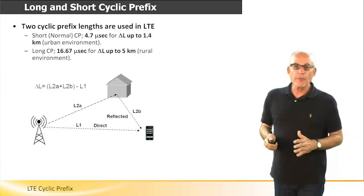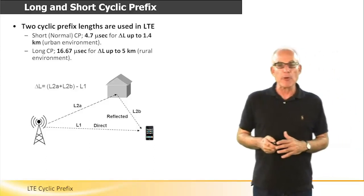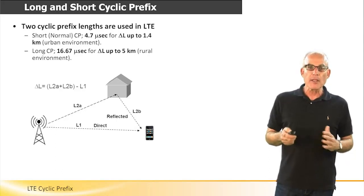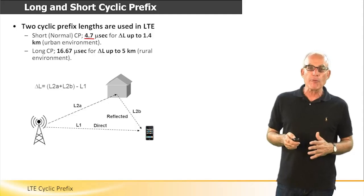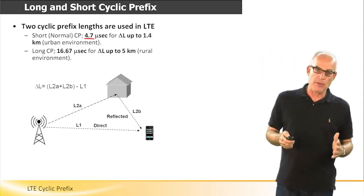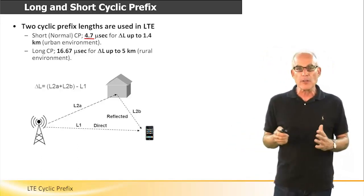LTE defines two lengths of cyclic prefix. The short one, called normal cyclic prefix, is 4.7 microseconds. This is more suitable for urban environments where reflections creating multipath come from relatively short distances in the magnitude of one to two kilometers.